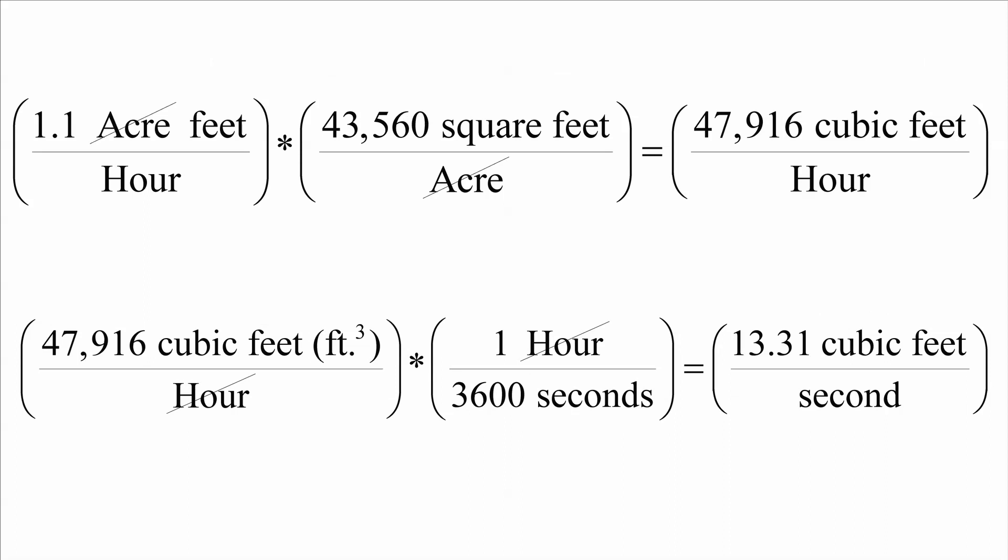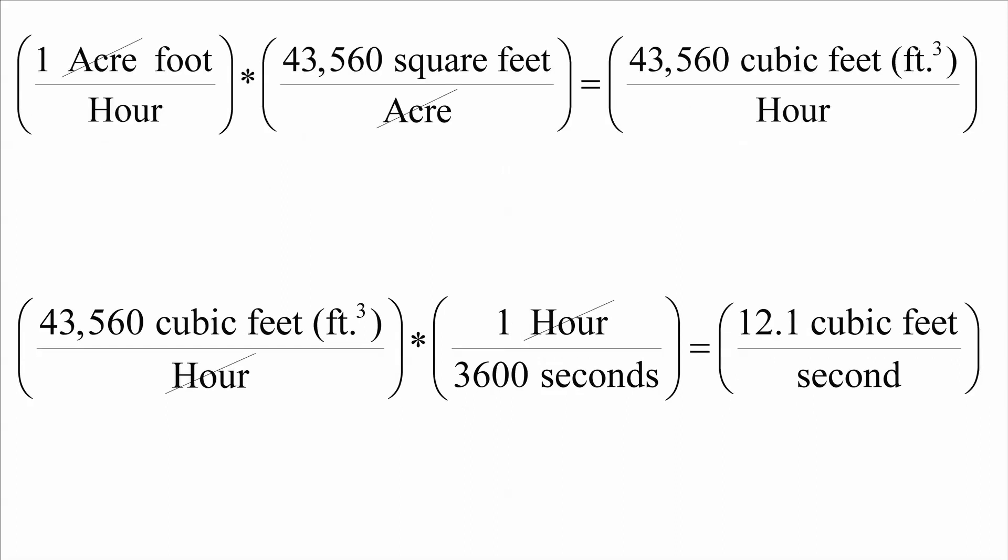We have shown that 1.1 acre feet per hour is equal to 13.31 cubic feet per second. If you just want 1 acre foot per hour, then it's equal to 12.1 cubic feet per second.